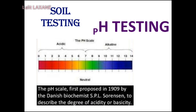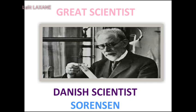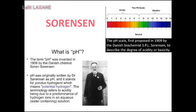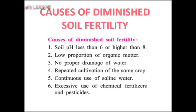You can determine the fertility of the soil in your fields with the help of different tests. Great Scientist: The Danish scientist Sørensen put forth the concept of pH based on the concentration of hydrogen ions. To determine the pH of the soil, a mixture of water and soil in the proportion 1:2 is taken and tested using several indicators. Accordingly, soil may be found to be one of the following three types: acidic soil (pH less than 6.5), neutral soil (pH 6.5 to 7.5), or alkaline soil (pH higher than 7.5). Causes of diminished soil fertility include: soil pH less than 6 or higher than 8, low proportion of organic matter, no proper drainage of water, repeated cultivation of the same crop, continuous use of saline water, and excessive use of chemical fertilizers and pesticides.